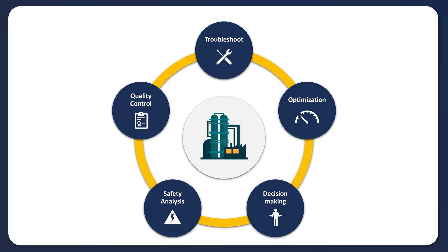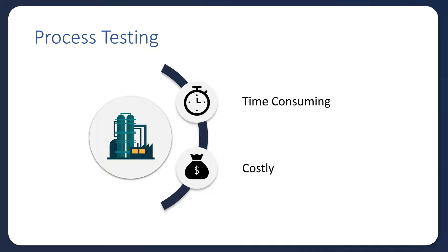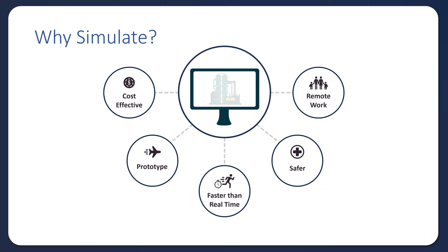As we think about process development — whether designing a new process or optimizing an existing one — there are many reasons we want to use models: quality control, troubleshooting, optimization, decision-making, or safety analysis. For process testing, it's often very time-consuming and costly to do step tests on a running process, so we use simulation instead. It's much more cost-effective, we can use historical data, and it's often safer than taking a loop manual and perturbing the process to derive models.